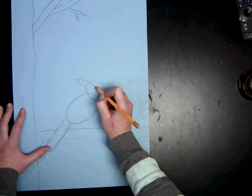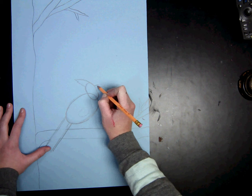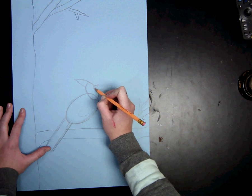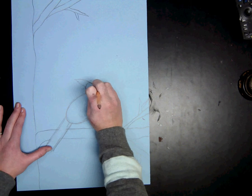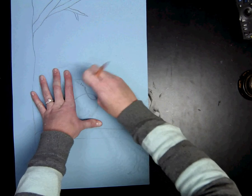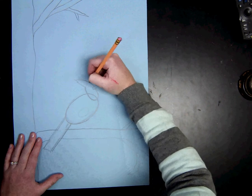For our beak, we have a triangle and then a half circle inside on the face. And then again, you can erase these lines. You can erase this line as well, so it looks like one head.